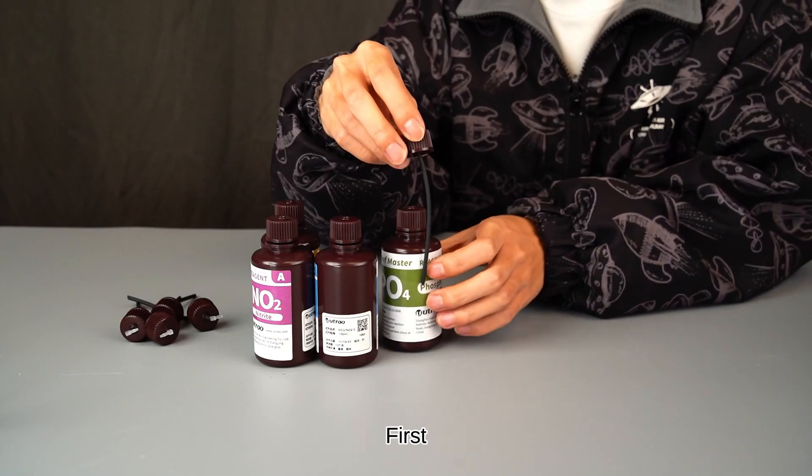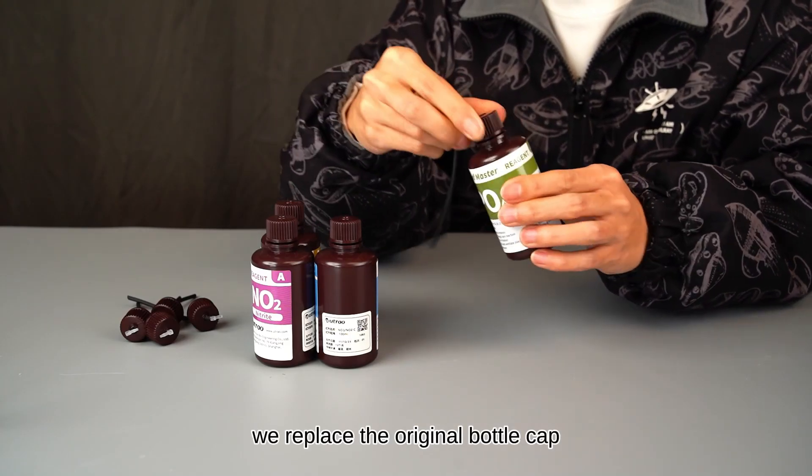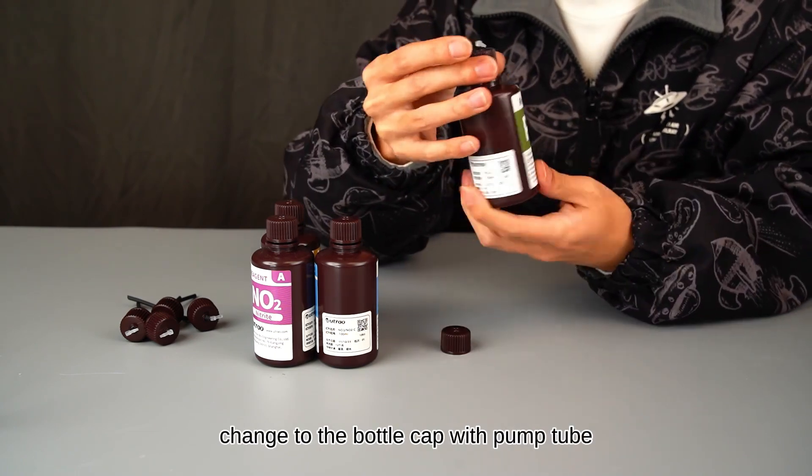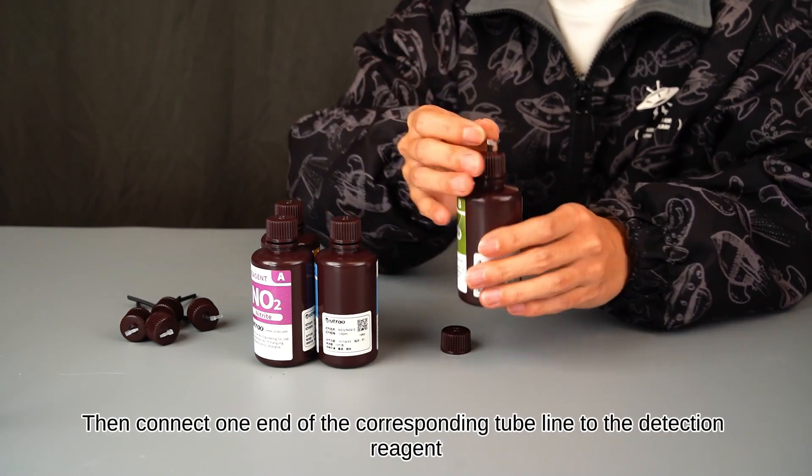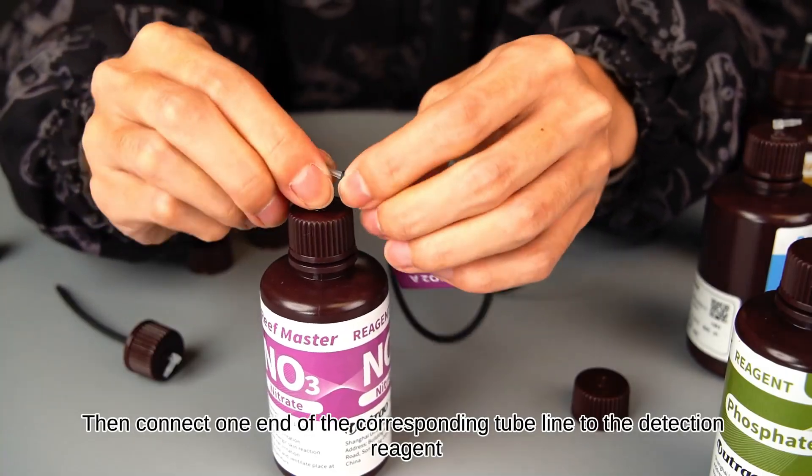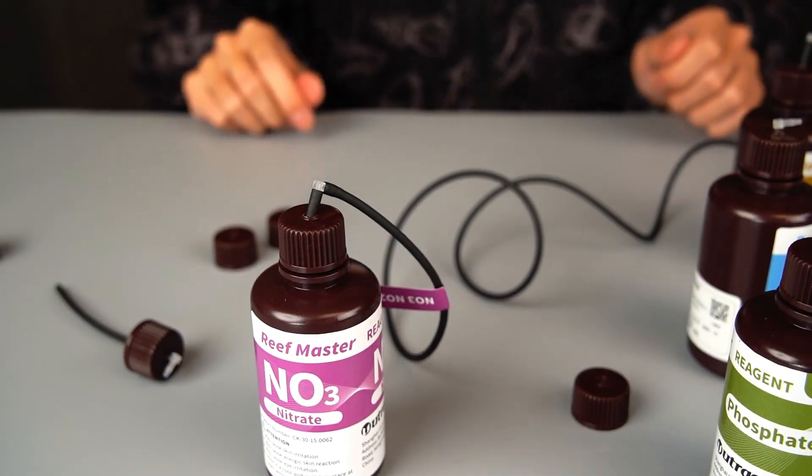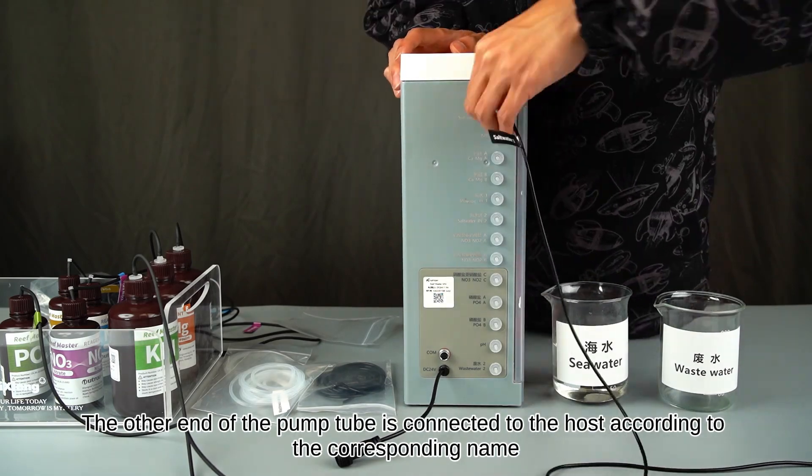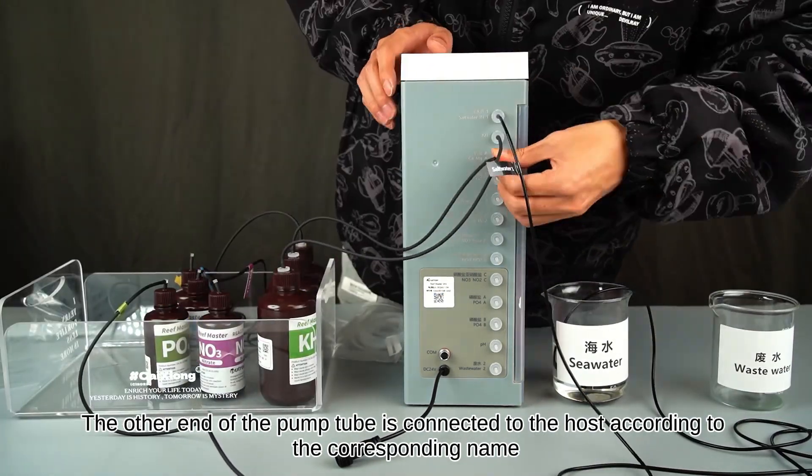This is the detection liquid. First, we replace the original bottle cap, change to the bottle cap with pump tube, then connect one end of the corresponding tube line to the detection reagent. The other end of the pump tube is connected to the host according to the corresponding name.